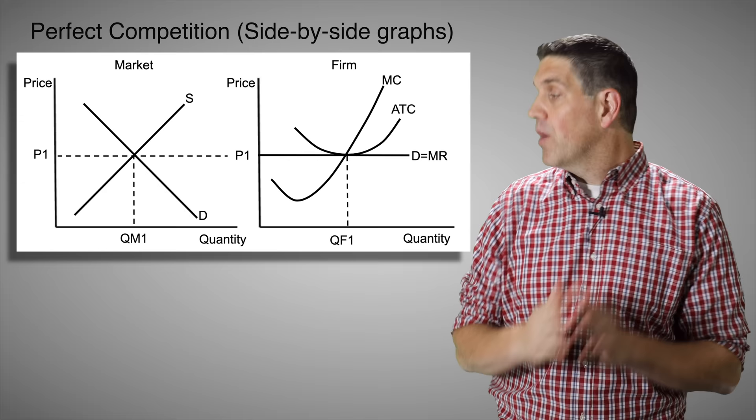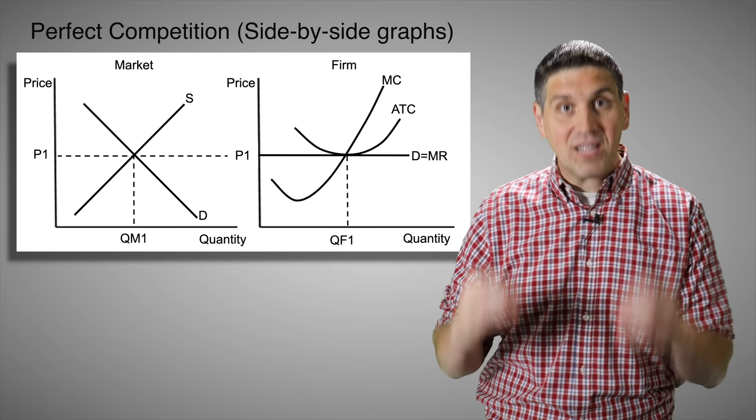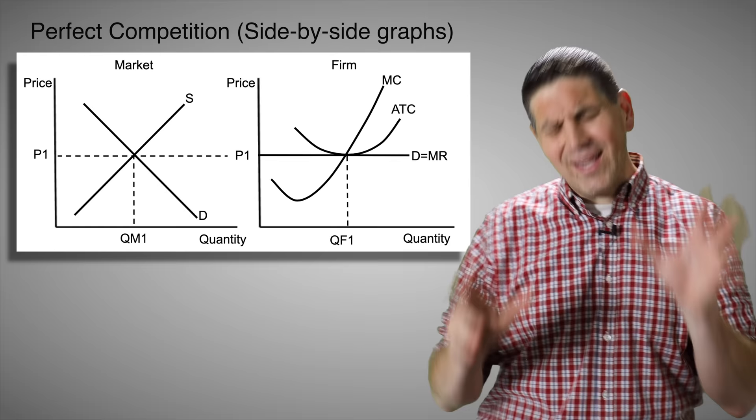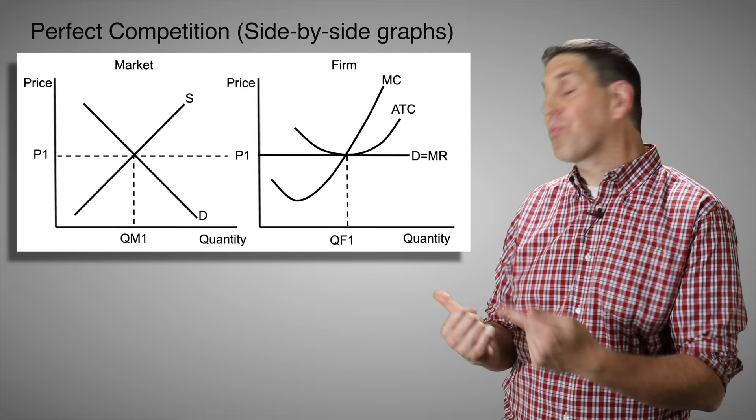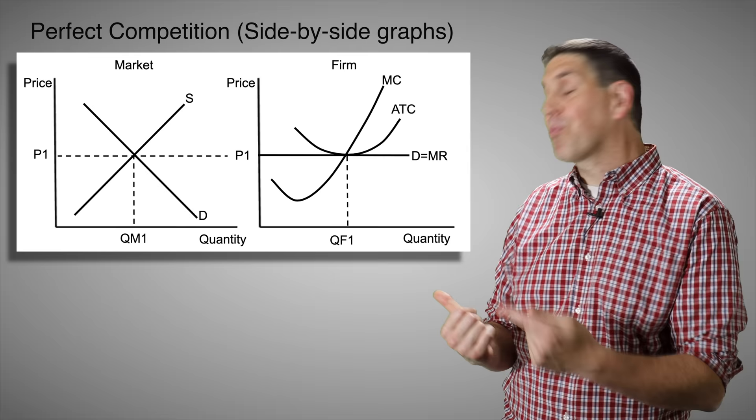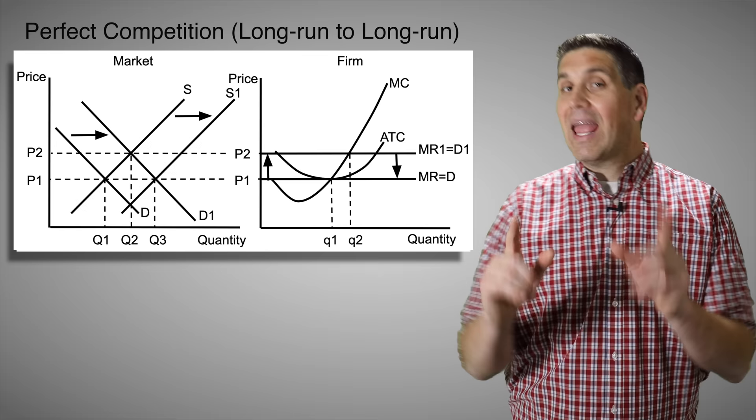This perfectly competitive firm in long run equilibrium is making no economic profit and is both allocatively and productively efficient. It's producing the amount society wants because it's producing where price equals marginal cost. It's also producing the productively efficient quantity because it's producing at the lowest possible cost — the minimum ATC. Perfectly competitive firms in the long run are extremely efficient with no deadweight loss. Your microeconomics teacher or professor will expect you to draw side-by-side graphs for a market and a perfectly competitive firm in both the long run, showing profit and showing a loss.